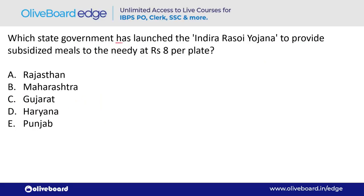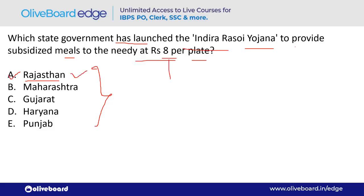Which state government launched the Indira Raso Yojana to provide subsidized meals to the needy at ₹8 per plate? The answer is Rajasthan — option A is the correct answer.